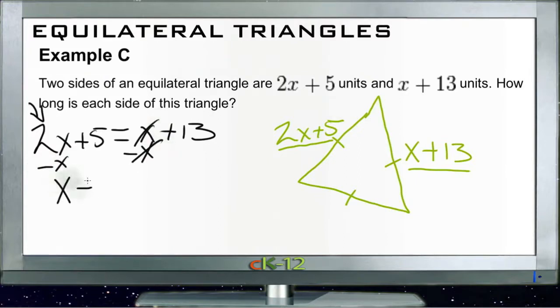And then we subtract 5 from this side so the variable's by itself, and subtract 5 from this side to keep it balanced. And we end up with x equals 13 minus 5 which is 8.